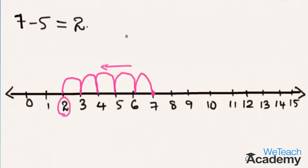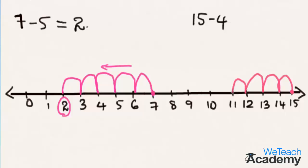Now let us consider the second example: 15 minus 4. We start from the number 15 and move 4 steps towards the left on the number line. Since we are subtracting, we move left and reach the number 11. So 15 minus 4 is equal to 11.